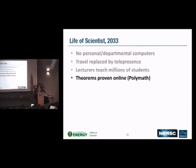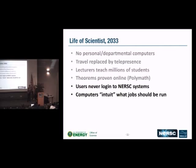Computers intuit what jobs should be run. In something like the Materials Genome Project with tens of thousands of simulations, it's not unreasonable for an algorithm to fill in part of a design space with simulations, or to run jobs automatically when users query a web interface about a particular material. The idea of not directly logging in and submitting batch jobs is not such a crazy idea. No users actually visit the other user facilities either — it's already the case that people don't come to NERSC to use NERSC.